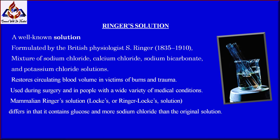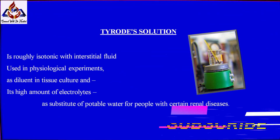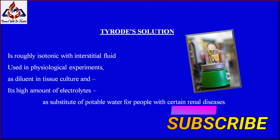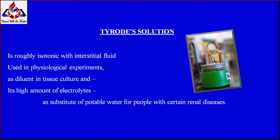Mammalian Ringer solution, or Ringer-Locke solution, differs in that it contains glucose and more sodium chloride than the original solution. Tyrode solution is roughly isotonic with interstitial fluid and is used in physiological experiments as a diluent in tissue culture, and due to its high amount of electrolytes, as a substitute for potable water for people with certain renal diseases.